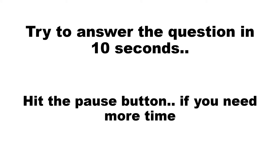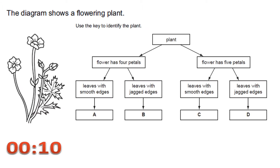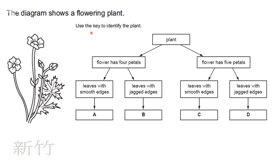Hit the pause button if you need more time. Let's start. The diagram shows a flowering plant — use the key to identify the plant. A dichotomous key is used to identify an unknown organism based on its traits or characters. Looking at this diagram, the first character is petals. Counting them: one, two, three, four, and five. We can see five petals, so our answer is going to be five petals.